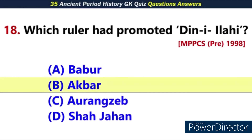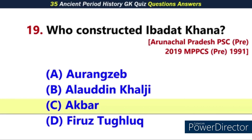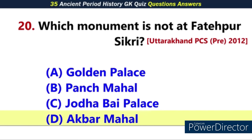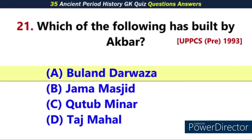Q18. Which ruler promulgated Din-i-Ilahi? Answer: B. Akbar. Q19. Who constructed Ibadat Khana? Answer: C. Akbar. Q20. Which monument is not built by Akbar? Answer: D. Akbar Mahal.